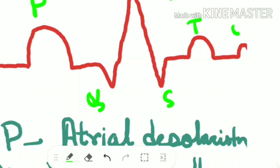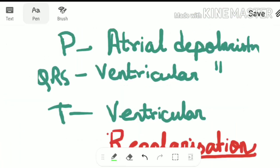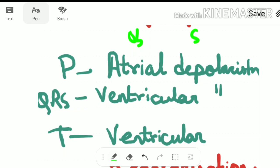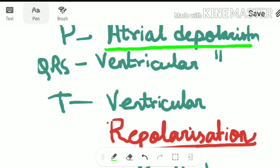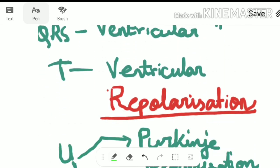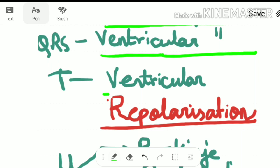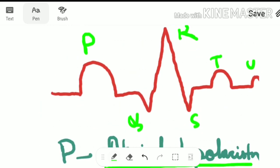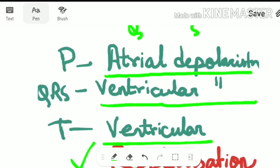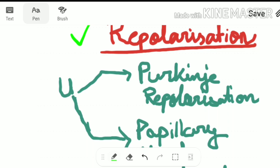This is the T wave and this is the U wave. Now let's see what these waves depict. The P wave shows atrial depolarization. The QRS wave shows ventricular depolarization. The T wave shows ventricular repolarization — it is important to note that T wave shows ventricular repolarization.